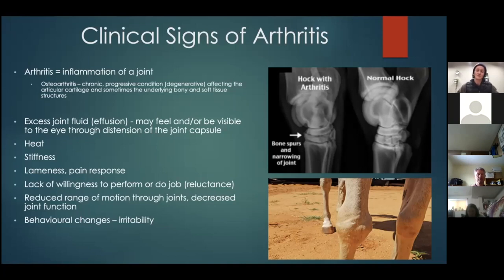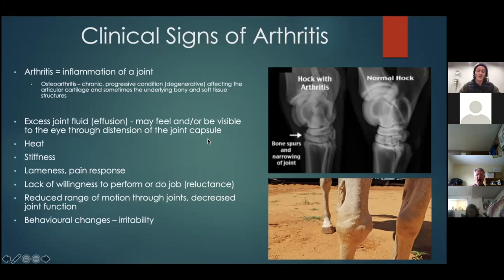Osteoarthritis affects the articular cartilage and sometimes the underlying bony and soft tissue structures. Other signs include excess joint fluid or effusion, and we may see distension or puffy joints because the joint capsule is puffing out with too much fluid. For example, a knee that looks more distended than normal has too much fluid.